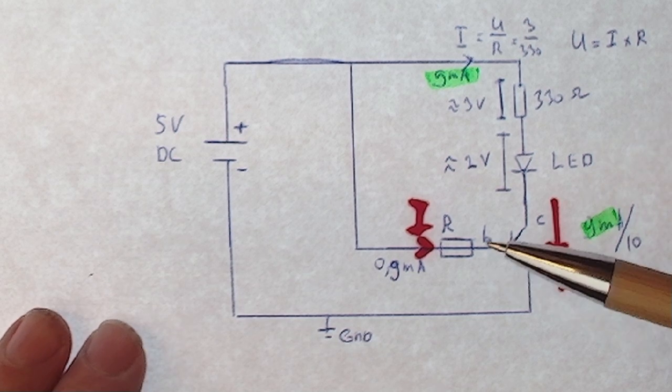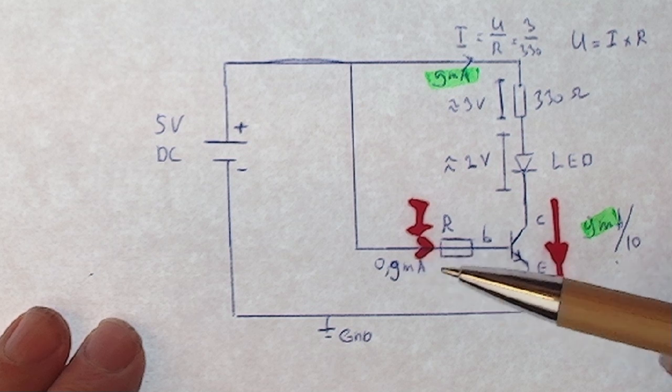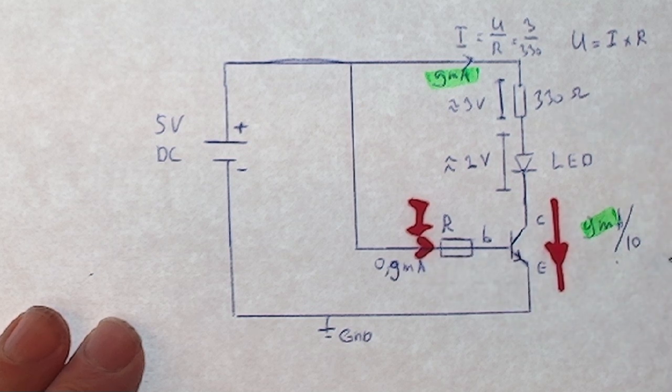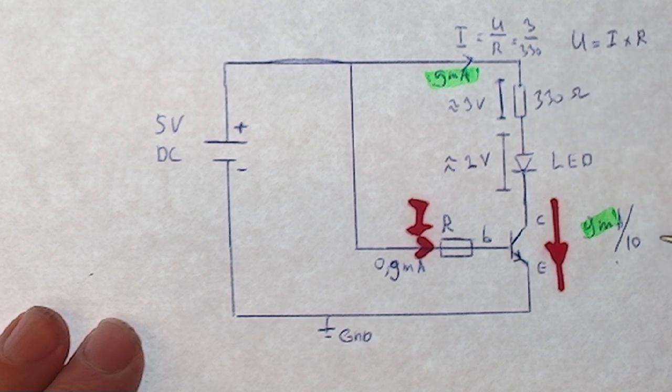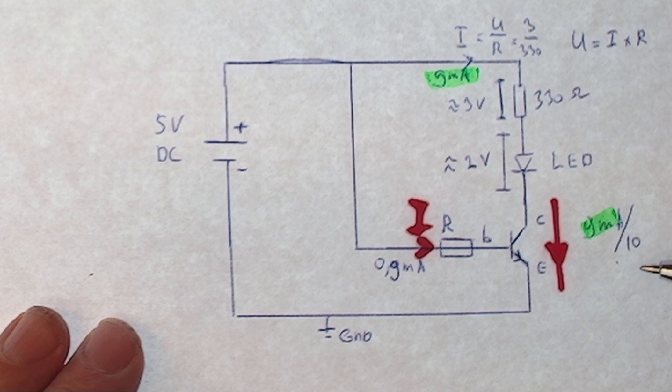Now to determine the current in this circuit, we can use a rule of thumb, and that is that we divide this current by 10, and we get 0.9 milliamps in this case in this circuit.